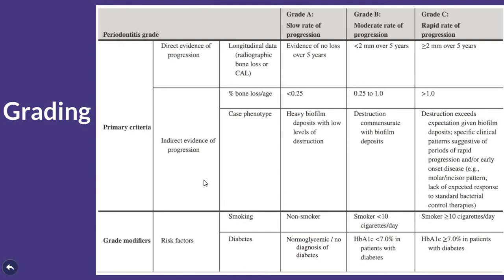Regarding grading: grading measures the progression rate of the disease — how rapid the destruction is, whether slow, moderate, or rapid. The primary criteria are detected by direct or indirect evidence. For direct evidence, you need longitudinal data — checking your patient every six months or annually to detect the amount of progression. Grade A (slow) means no bone loss over five years.